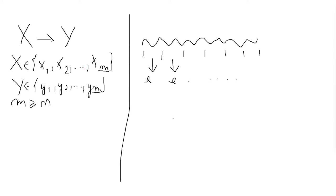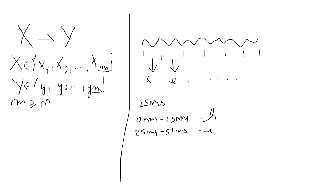However, labeling data in this way is very hard in practice, because you would want your algorithm to have a small window in order to not miss any characters. Usually in speech recognition there is a window of 20 milliseconds. So to annotate your audio file this way, you would have to say that from 0 to 20 milliseconds we have the character 'h'.